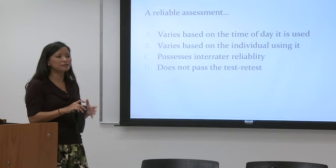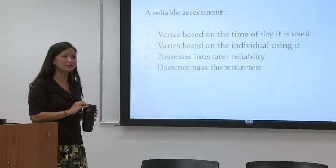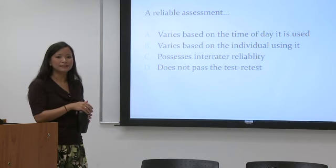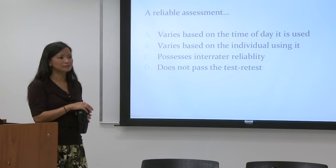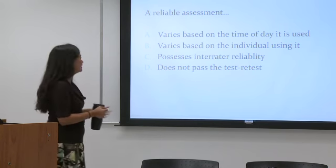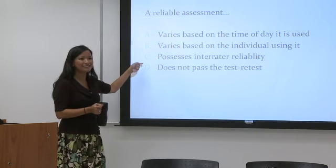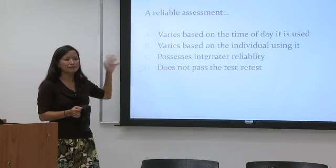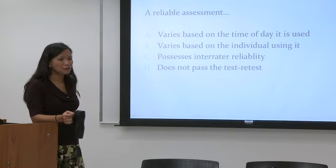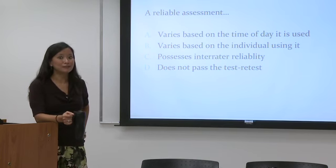And what are we looking for with those incorrect responses? What would make it a better test question, a good test question? What do we want from the incorrect answers? — I think you want something that's sort of right, but not exactly right. — Yes, and that's the hard part. It's so easy to come up with the right answer because we know what that is, but it can be hard to come up with incorrect answers that sound plausible.